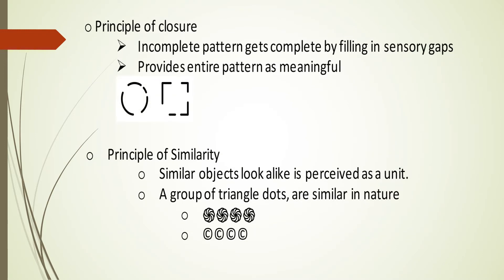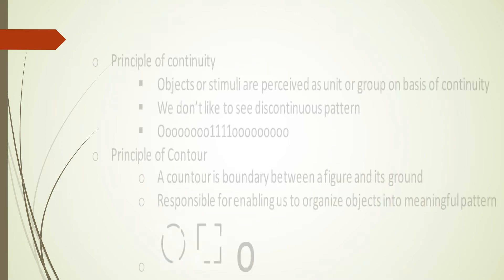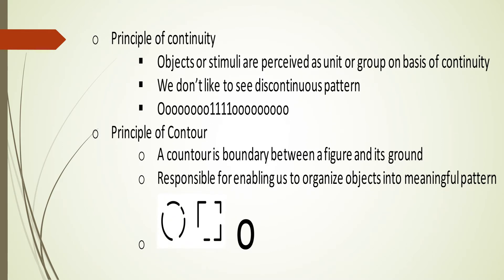The first principle is closure — incomplete patterns get completed, fulfilling sensory gaps to provide a meaningful entire pattern, as seen in the example. Next is the principle of similarity — similar objects look alike and are perceived as a unit; a group of triangular dots are similar in nature. Next is the principle of continuity — objects or stimuli are perceived as a unit or group on the basis of continuity; we don't like to see discontinuous patterns, as seen in the example.